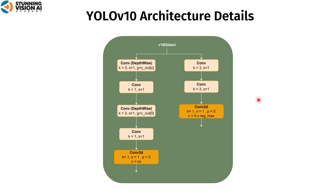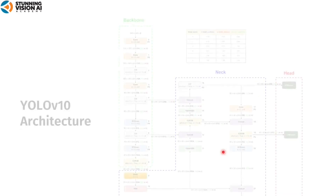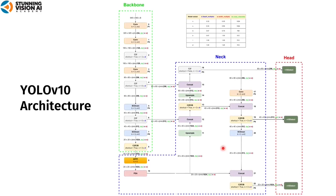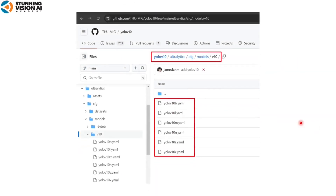You have learned every YOLO V10 component in detail. Now I will explain the overall YOLO V10 architecture. In general, the YOLO architecture is divided into three parts: the backbone, neck, and head. The backbone acts as a feature extractor; the neck combines features from various backbone layers; the head predicts classes and bounding box regions. This architecture drawing is based on the YOLO V10 architecture file located in the ultralytics/cfg/models/v10 folder, which contains several files showing variants of YOLO V10.